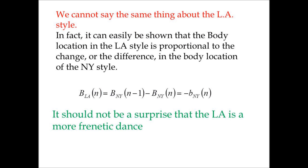We cannot say the same thing about the L.A. style. In fact, it can easily be shown that the body location in the L.A. style is proportional to the change, or the difference, in the body location of the New York style. So the body location in the L.A. style is the change of the body location in the New York style. If we use continuous analysis, we would say that the body location in the L.A. style is the derivative of the body location in the New York style. Therefore it has higher frequencies — it is well known that operating a derivative is like using a high-pass filter. This is the reason why the L.A. dance is more frenetic.